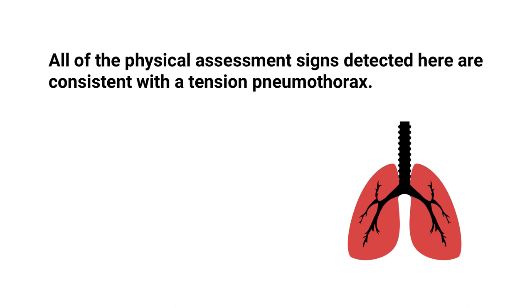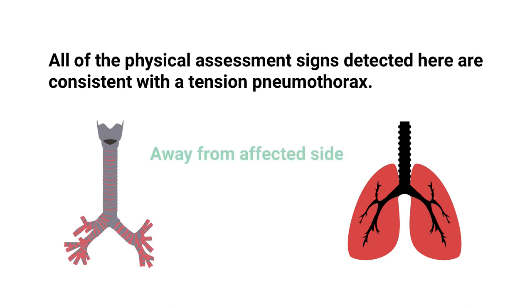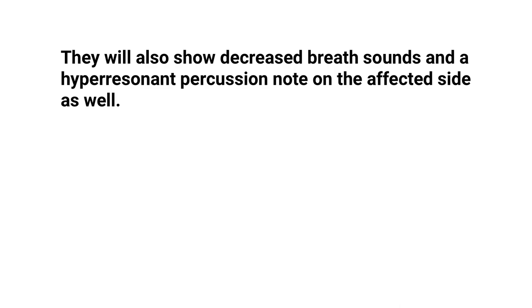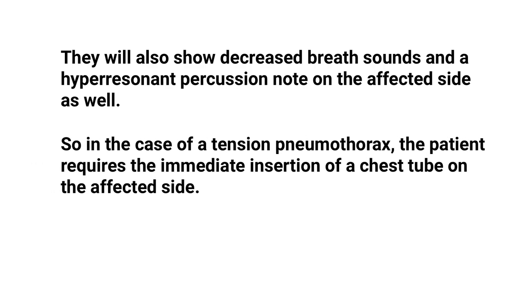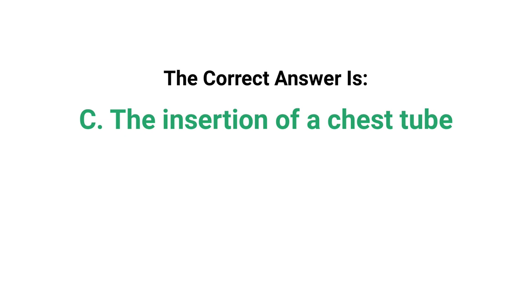Patients with a pneumothorax will typically show tracheal deviation away from the affected side. They will also show decreased breath sounds and a hyper-resonant percussion note on the affected side. In the case of a tension pneumothorax, the patient requires the immediate insertion of a chest tube on the affected side. None of the other answer choices make sense in this situation, so the correct answer is C, the insertion of a chest tube.